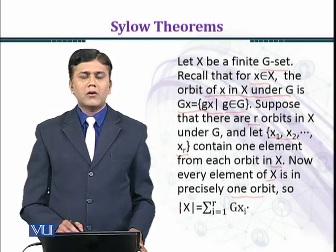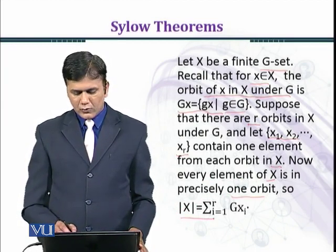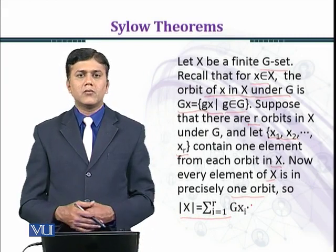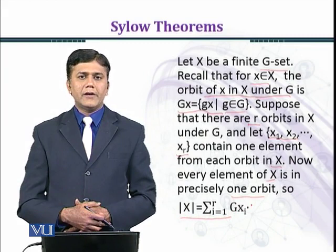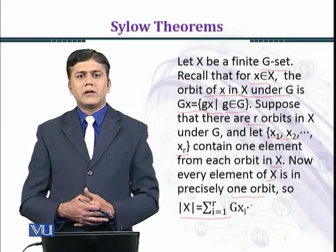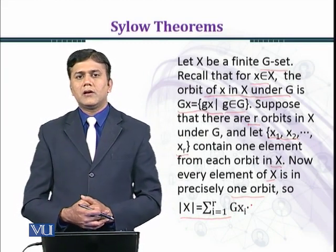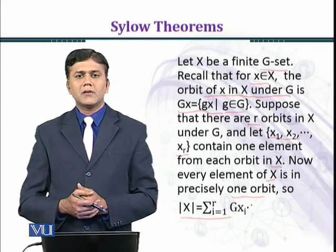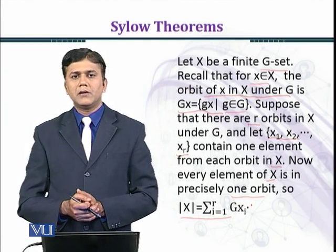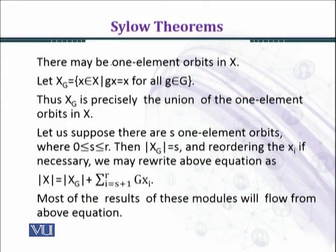Now every element of X is in precisely one orbit, so |X| = Σᵢ₌₁ʳ |Gxᵢ|. We have established this result in an earlier class, and this is a consequence which we have recalled.